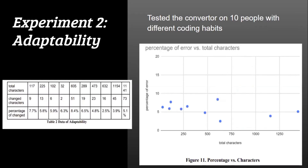The next experiment measures adaptability to different users. Experiment one used Python code inputs from only one coder — the builder of this converter. However, different coders have different coding habits, which could influence the converter's accuracy. To test effectiveness on different coders, we gathered 10 Python code samples from 10 different coders, with program lengths ranging from 10 to 100 lines, and used the converter to transpile each into Java code. The analysis of the 10 outputs showed that the percentage of translation error fluctuates between two percent and nine percent, demonstrating good adaptability to different coders.